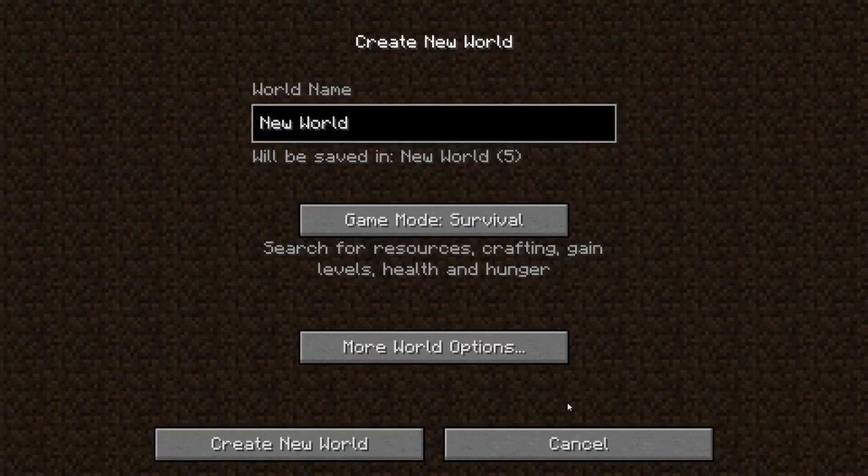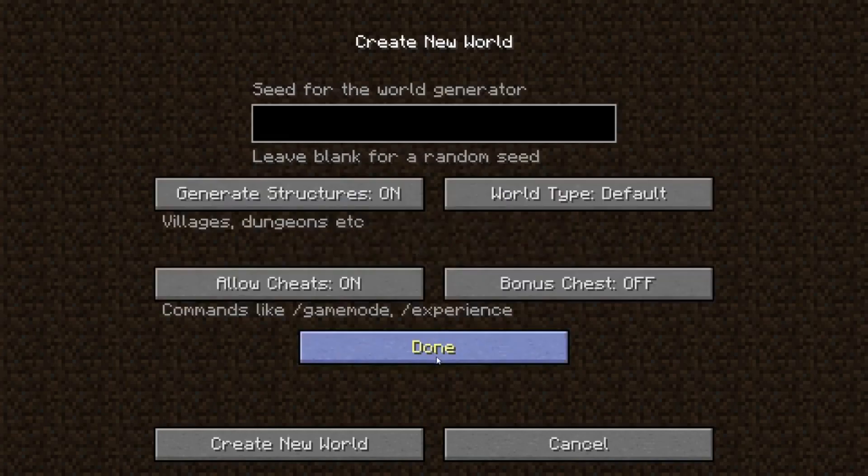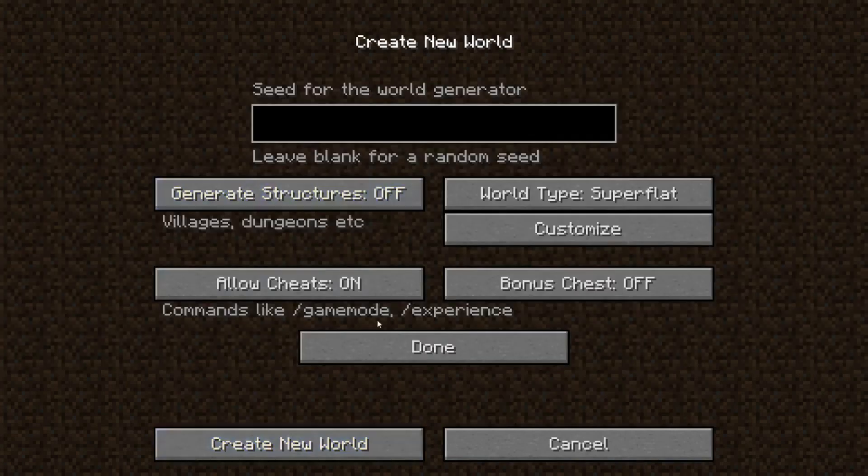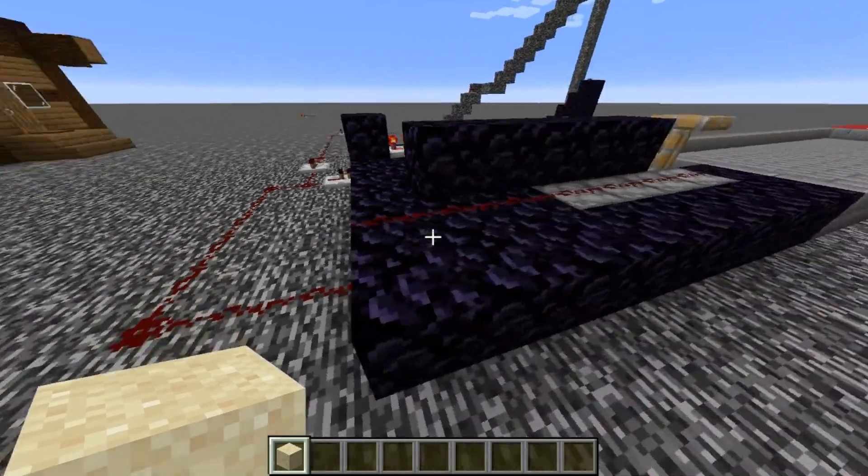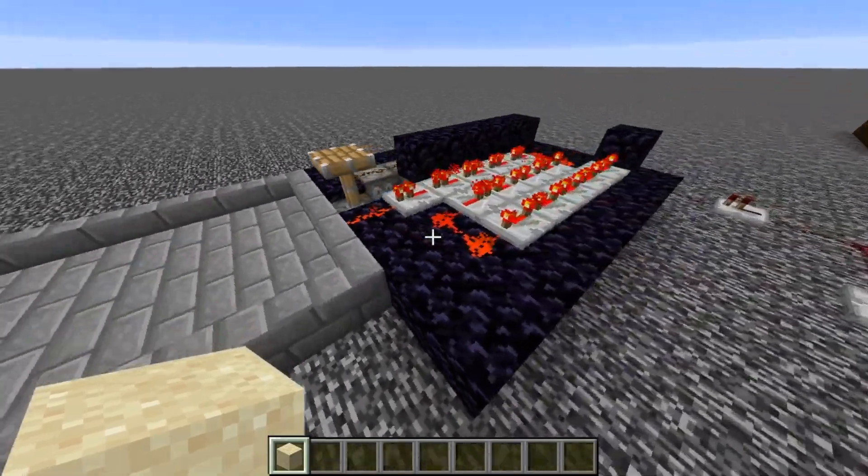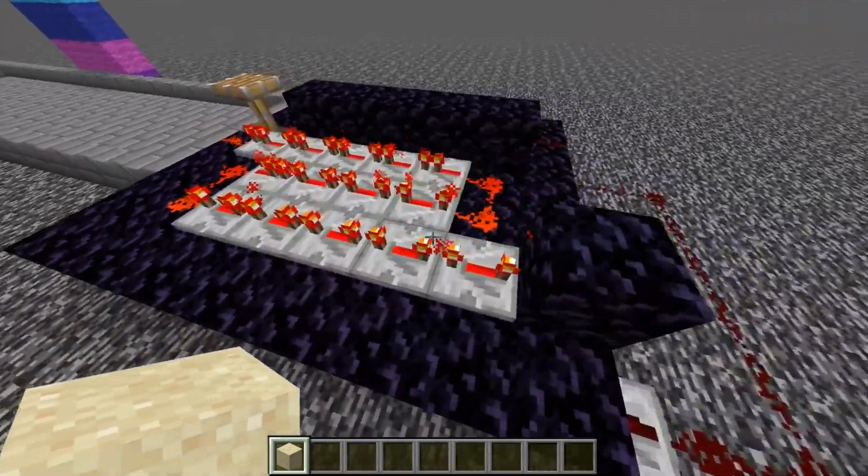The procedure for our experiment is as follows. First, load a super flat world. Second, build the sand cannon as shown using dispensers, TNT, redstone, obsidian, a bucket of water, a piston, and a sand block.